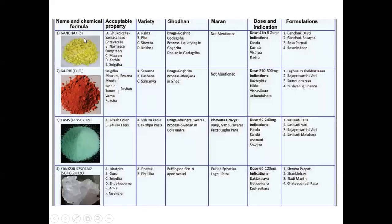Gandhak, that is Sulphur. Regarding the properties: Shukha, Pichha, Samachaya, Pithavarana, it has having the Pitha yellow colour. Then Navanita Samprabha, then Masruna, Kathina and Snigdha. These are the properties of Gandhak.